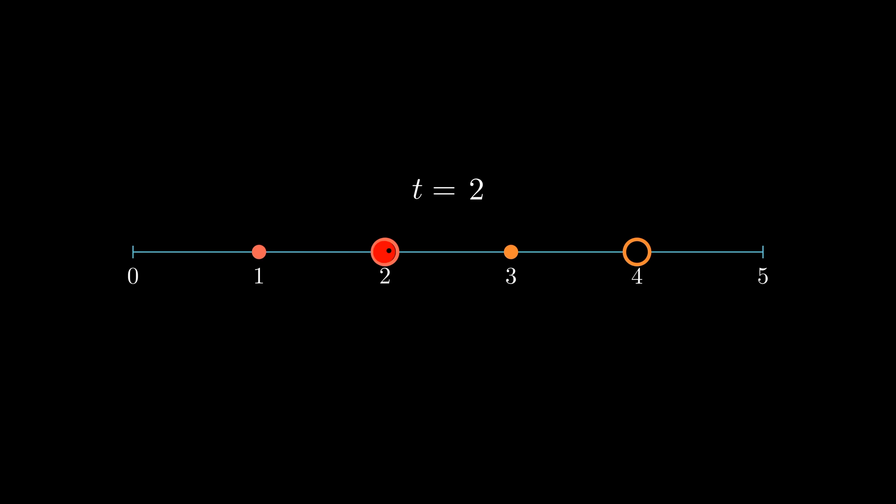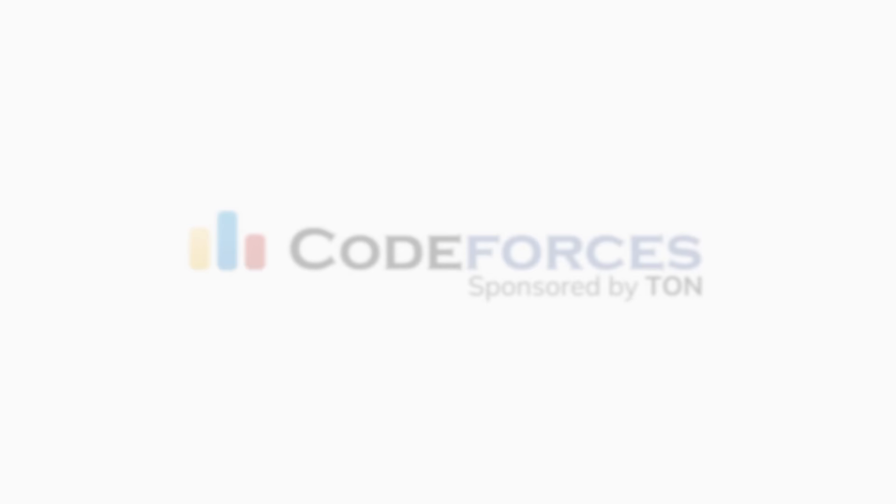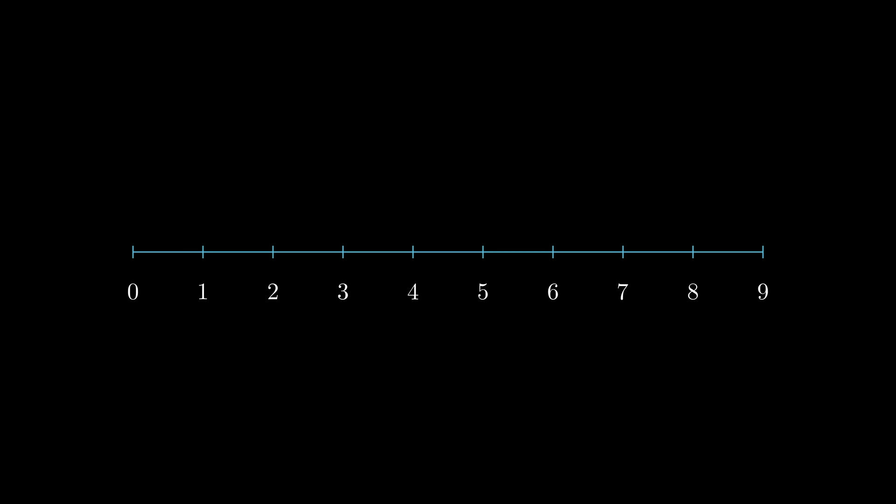In other words, whenever the ant reaches an entrance, it gets toggled on or off. The scenario I've just described to you is the setup to a problem on CodeForces, a competitive programming website. Our goal is to write a program that computes the total time in seconds for our ant to pass the rightmost and final entrance, given an initial configuration of the open and closed states.